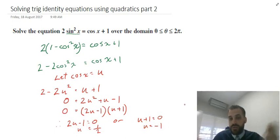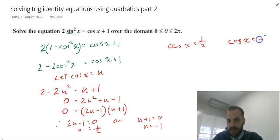You should be familiar with this because this looks identical to the last video. If I know that u = 1/2 and u = -1 and I know that u = cos x, that means cos x = 1/2 and cos x = -1.